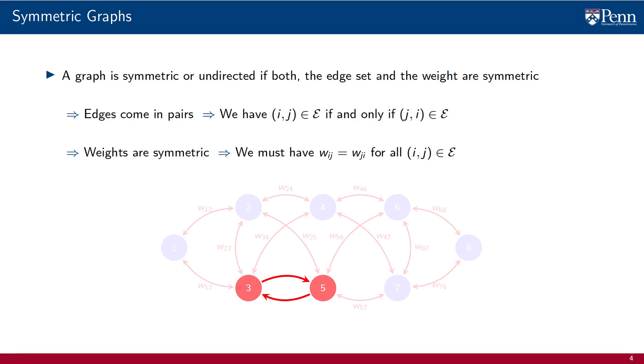In addition to edges being symmetric, weights have to be symmetric as well. We must have that w(i, j) and w(j, i) are the same. In this particular graph, the weight w(5, 3) must be equal to the weight w(3, 5). This is something that we can signify with a double pointed arrow and a single weight. If all edges are connected in both directions, with all weights being symmetric, as is shown here, the graph is symmetric.